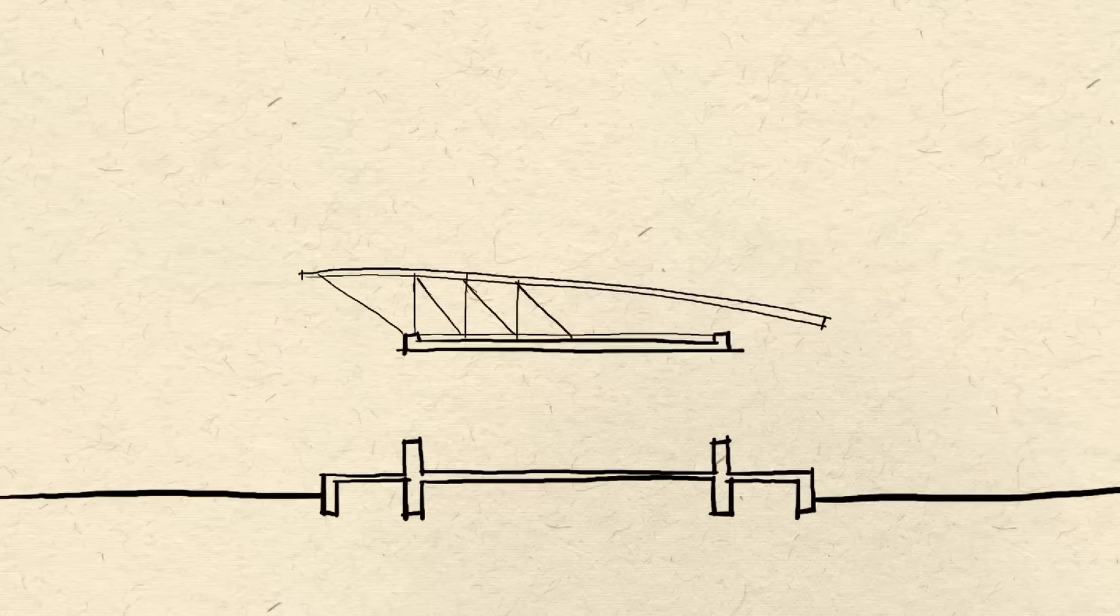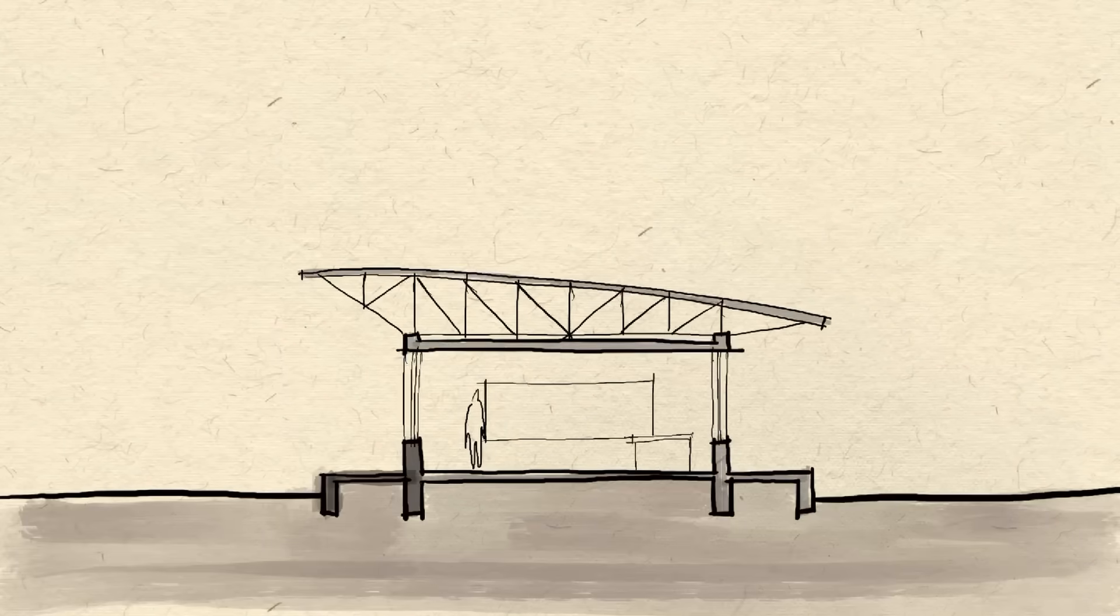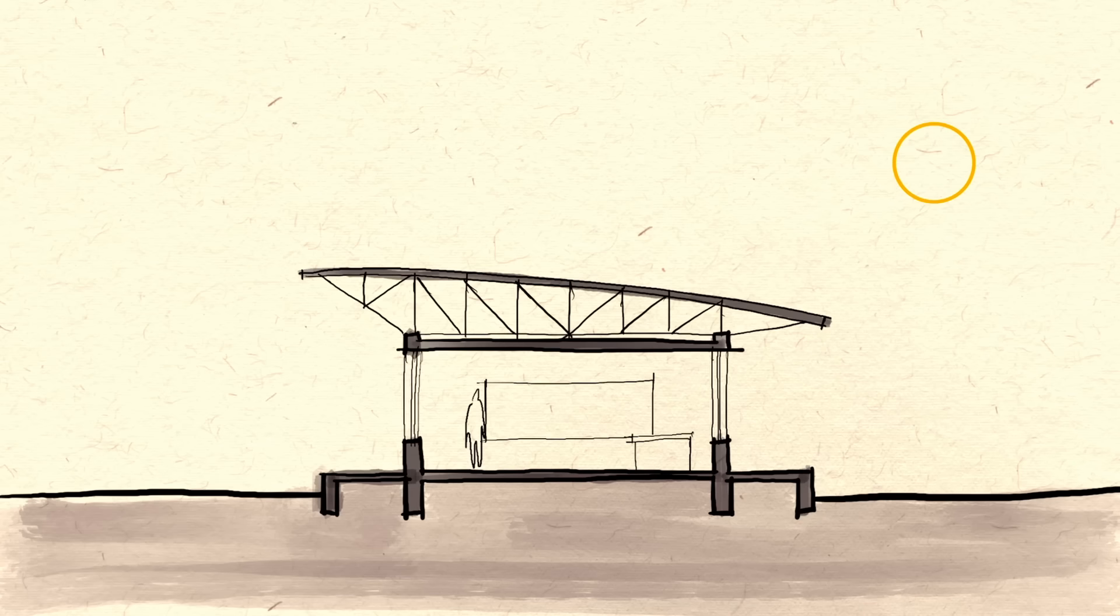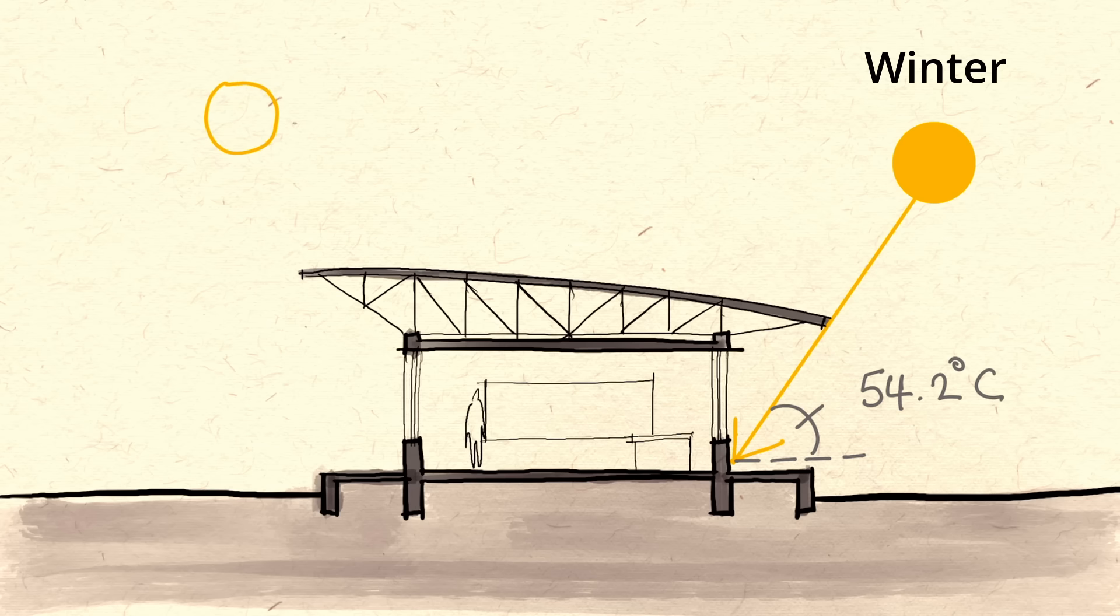The angle of the sun in Burkina Faso is pretty steep even during winter, which means that the sun is always high in the sky. And because it is quite hot all year long, there is actually no need for solar gains through the windows. The canopy of the roof is therefore designed to stop the harsh sun from entering the building even during winter.